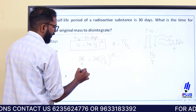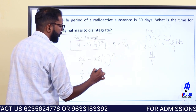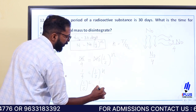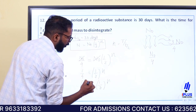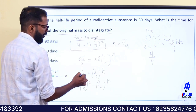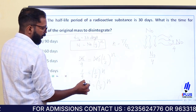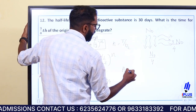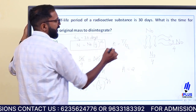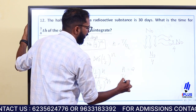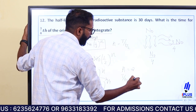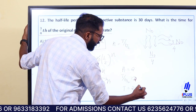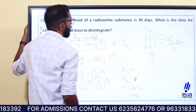We write 1/4 equal to (1/2) raised to n. Since (1/2) squared equals 1/4, n equals 2. Therefore T by T-half equals 2, so t equals 2 into T-half equals 2 into 30.